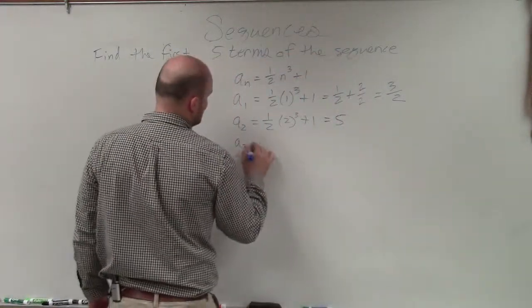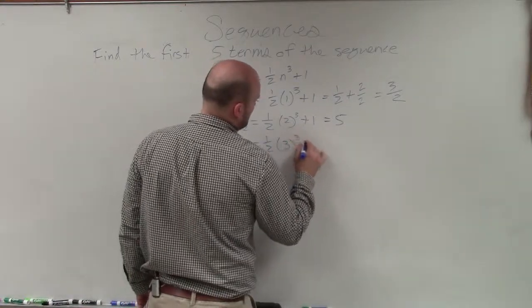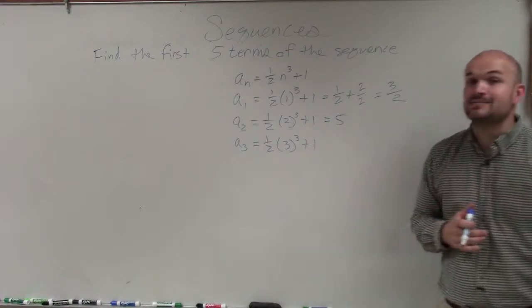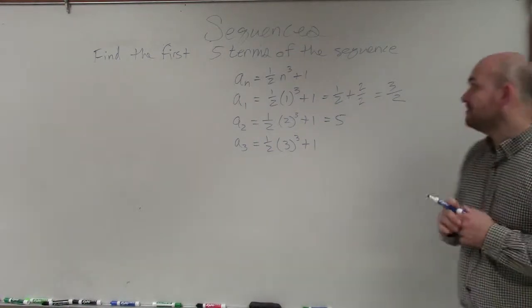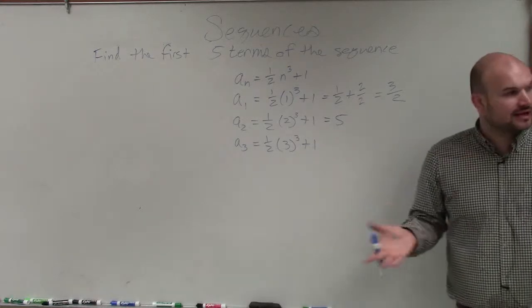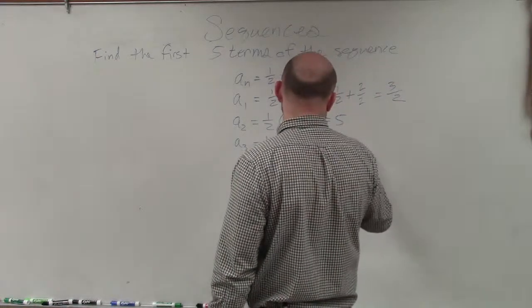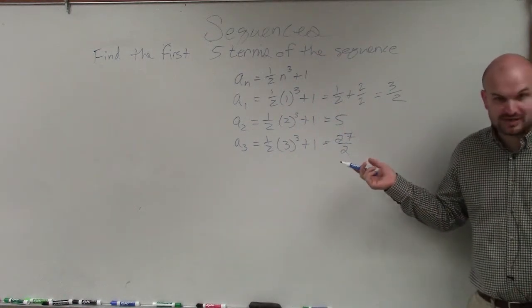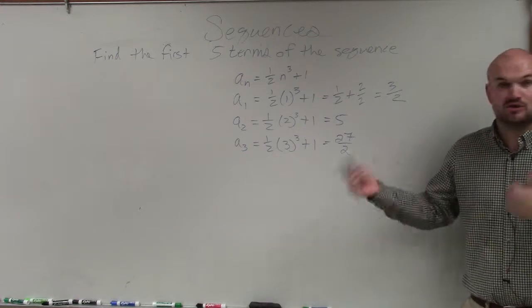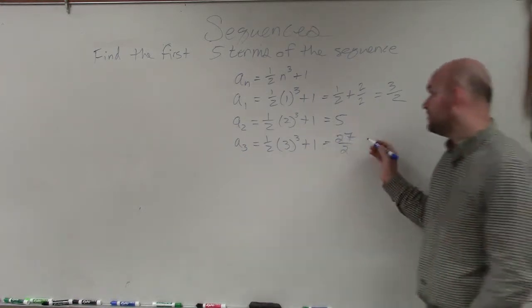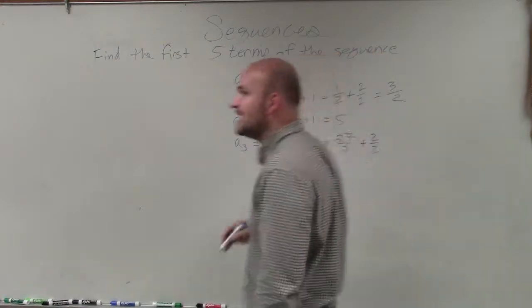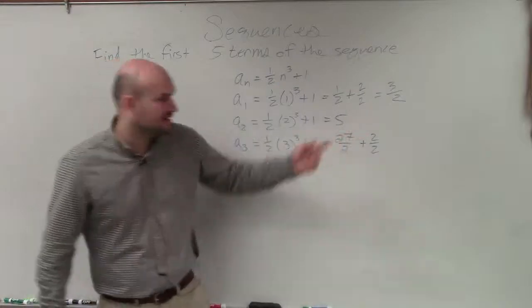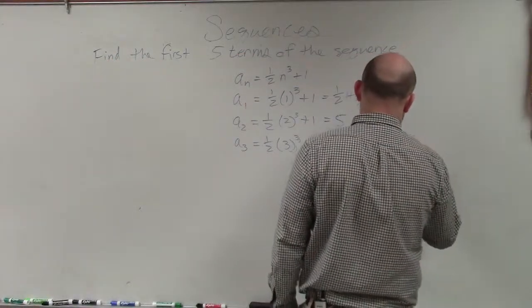Let's do a3. So 3 cubed is 3 times 3, which is 9, times 3, which is 27, times 1 half. Again, you don't need to worry about putting it into decimals. Just write that as 27 over 2, right? 27 times 1 half, would you guys agree? It's going to be 27 divided by 2. It's the same thing. Divided by 2, multiplied by 1 half, and then plus 1. Well, again, instead of adding plus 1, let's just add 2 over 2, because that has the same denominator. So now, we just add the numerators, which is going to equal 29 over 2.